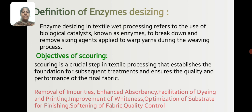Objectives of Scouring. Scouring is a critical step in textile processing that establishes the foundation for subsequent treatment and ensures the quality and performance of the final fabric. Key objectives include: removal of impurities and enhanced absorbency.